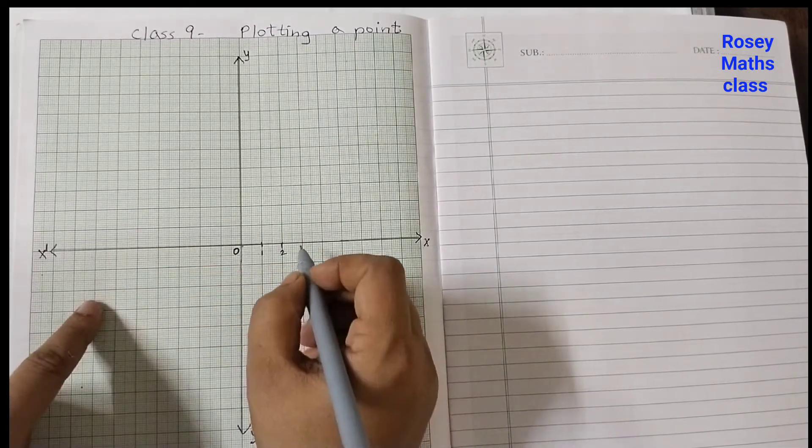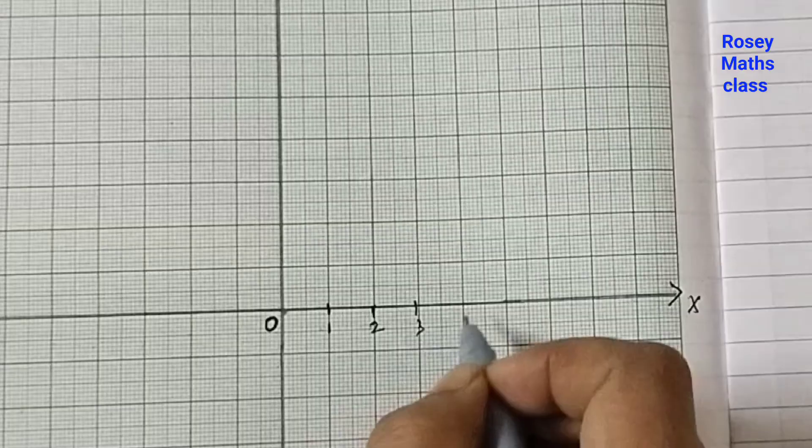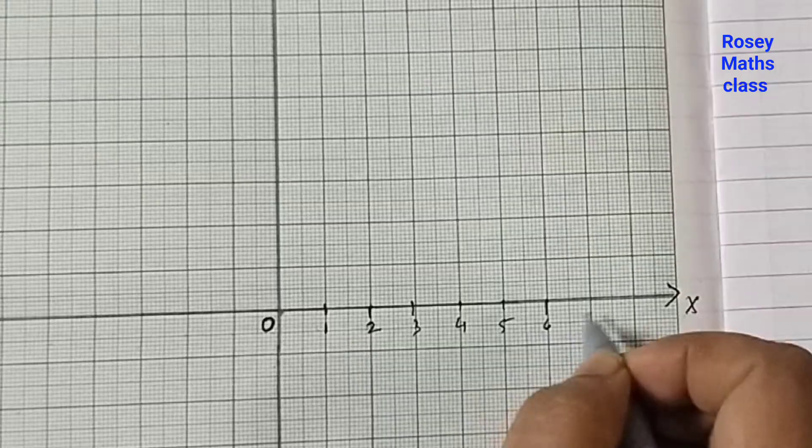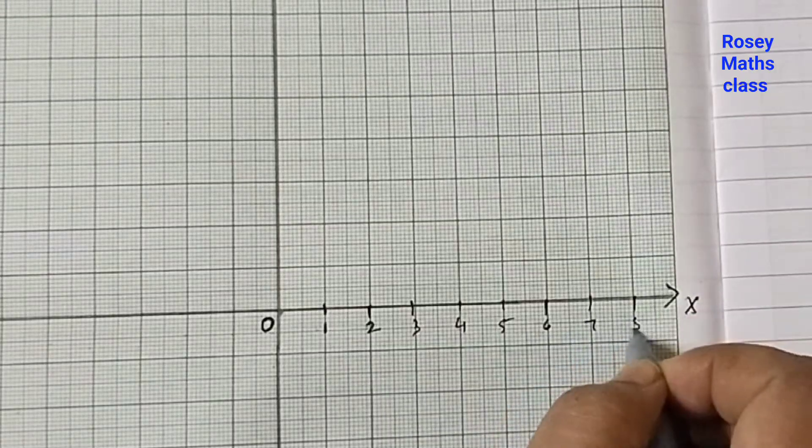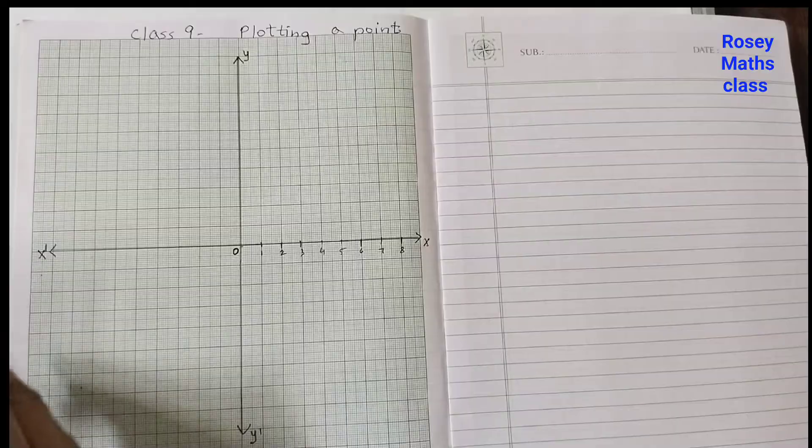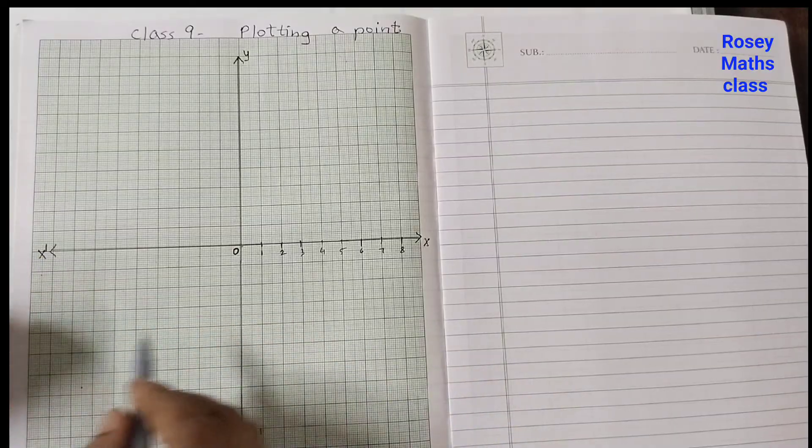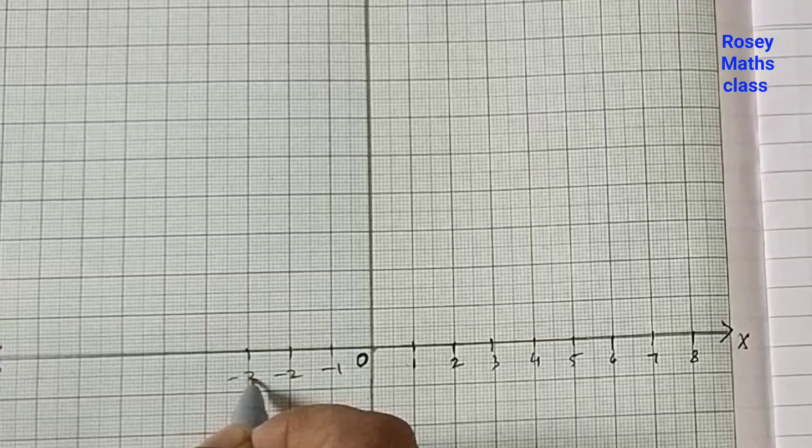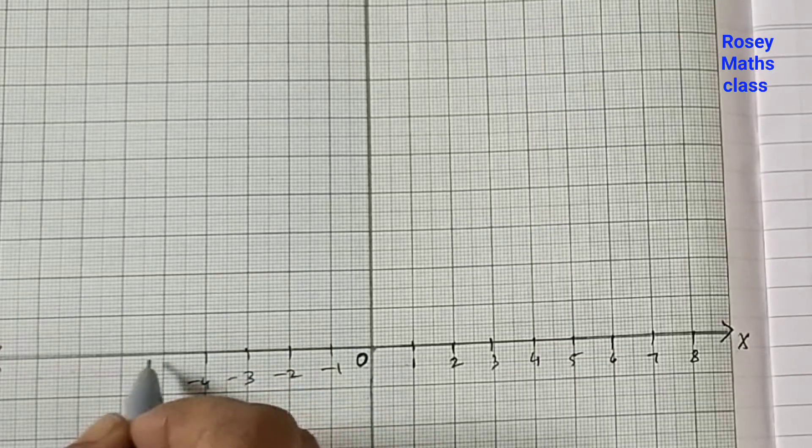So we have space till eight. I'm doing till eight. Left hand side you will have all the negative integers: minus one, minus two, minus three, minus four, minus five, minus six, minus seven, minus eight. This is on your x-axis.